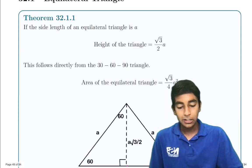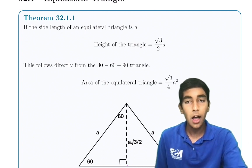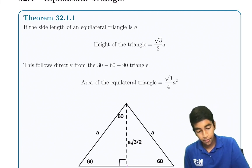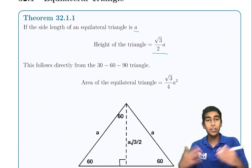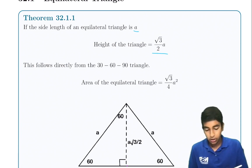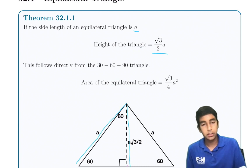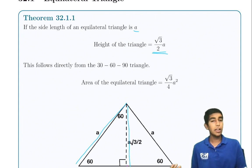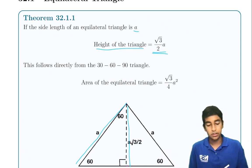An equilateral triangle is a triangle with three equal sides. The most important property is that the height of an equilateral triangle with side length A is (√3/2) × A. This can be useful to find many things like area, perimeter, incenter, and circumcenter — whatever the problem might ask. This is definitely worth knowing.